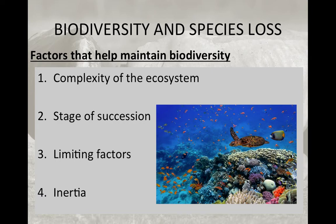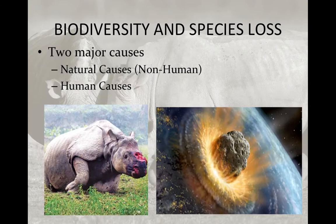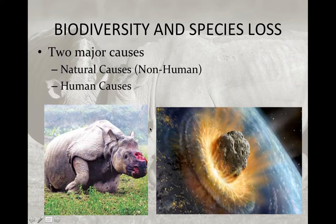To maintain biodiversity, we need complex ecosystems with multiple trophic levels and different stages of succession — plants first, then animals invading a region after, for example, deforestation. When looking at species loss, we have two major causes: natural causes, which as shown earlier represent a very small percentage — things like the mass extinction event that killed the dinosaurs, depicted here by a meteor impacting the Earth — and human causes, such as poaching, illustrated by a very unfortunate photograph of a rhino that has had its horn removed.